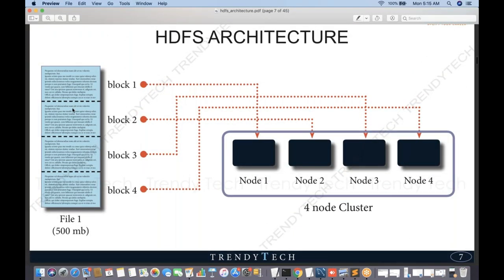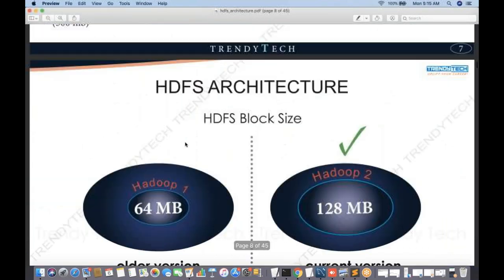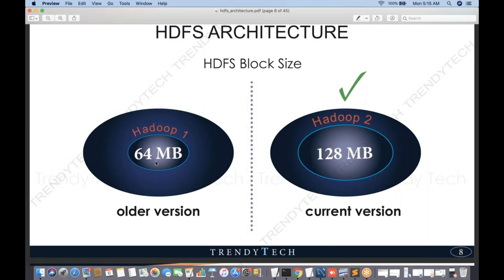How did we conclude we need to divide into four blocks? Some might think it's because we have four nodes, but that is not the case. The number of blocks is dependent on the block size. The block size in Hadoop 1 was 64 MB, and in Hadoop 2 — the current version used in industry — it is 128 MB.